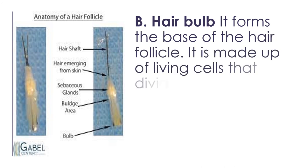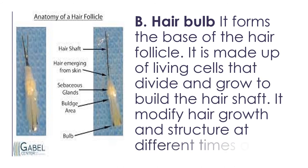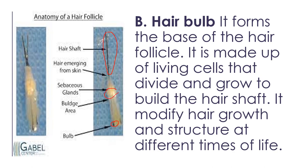The hair bulb forms the base of the hair follicle. It is made up of living cells that divide and grow to build the hair shape. It modifies hair growth and structure at different times of life. The hair shaft is the actual visible strand of hair. The sebaceous gland is attached nearby, and together these form the main parts of the hair.